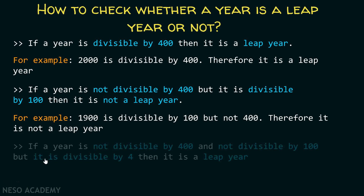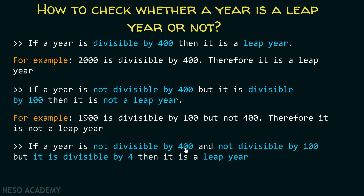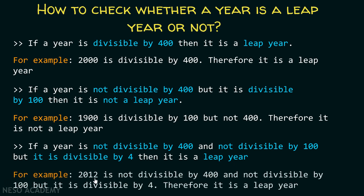The third condition is: if a year is not divisible by 400 and not divisible by 100, but it is divisible by 4, then it is a leap year. For example, 2012 is not divisible by 400 and not divisible by 100, but it is divisible by 4, therefore it is a leap year. On the basis of these three conditions we can construct our code to check whether a year is a leap year or not.